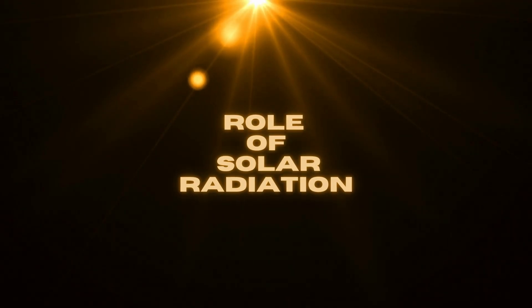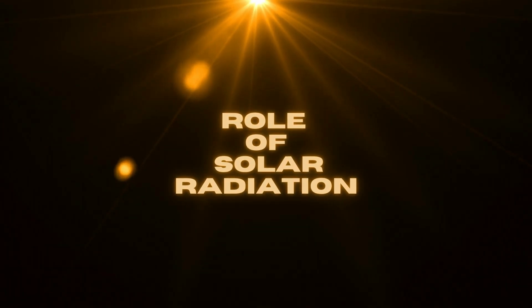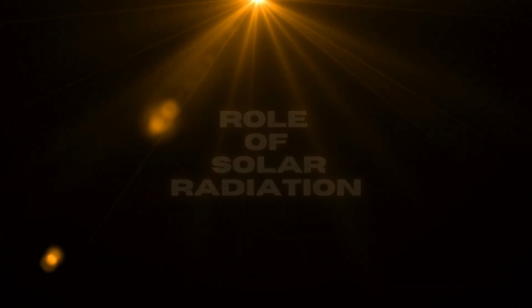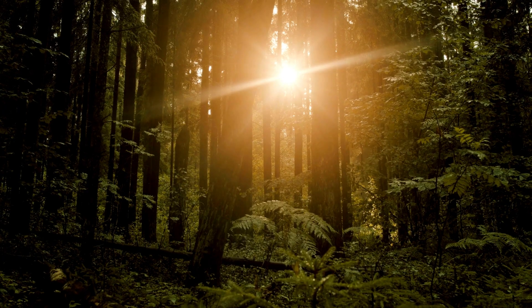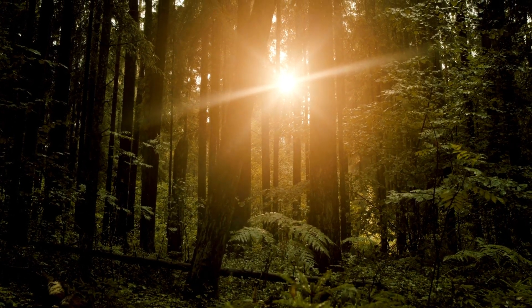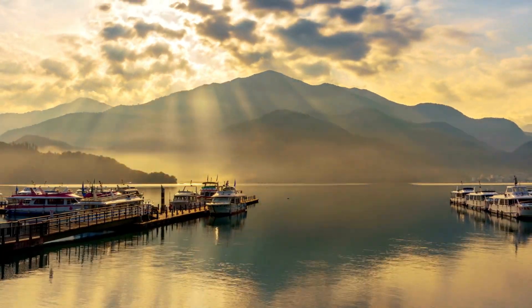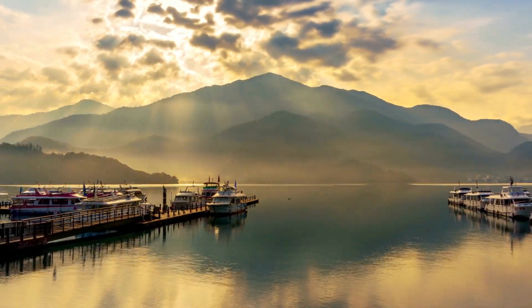During summer, the sun's rays strike the earth more directly than in other seasons. This leads to longer daylight hours and intense heating of the earth's surface. The intense heat causes the air above the surface to warm up, making it less dense and causing it to rise.